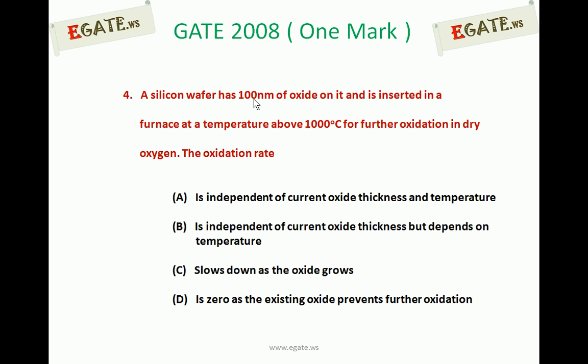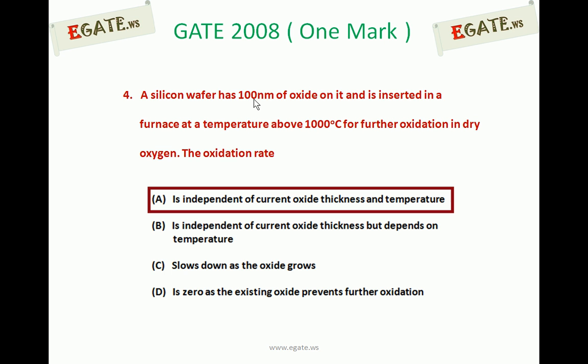We should understand that the silicon wafer already has an oxide layer of 100 nm and is exposed for further oxidation using dry oxygen at above 1000 degree centigrade. For dry oxidation, the oxidation growth rate is independent of current oxide thickness and temperature — this is answer A. For wet oxidation, the answer would be C: slows down as the oxide grows. Since the question asks about dry oxidation, the answer is A.